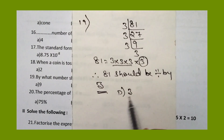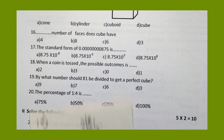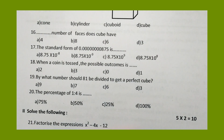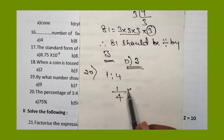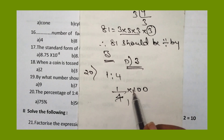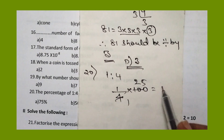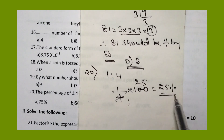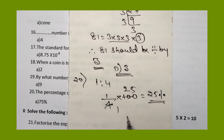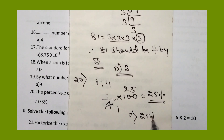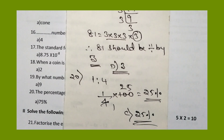The twentieth question: what is the percentage of 1 is to 4? 1 by 4 multiplied by 100 equals 25%. Option C, 25%, is the right answer. Like this we have solved practice paper number 1. The descriptive answers will be covered in the next video. Thank you for watching my YouTube channel, please encourage my videos. Thank you very much.